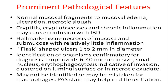Severe cases show flask-shaped ulcers 1–2 mm in diameter, as seen in the gross photograph of the colon. Identification of the organisms is confirmatory for diagnosis. Trophozoites are 6–40 microns in size, have a small nucleus, and show erythrophagocytosis, which is indicative of invasion.